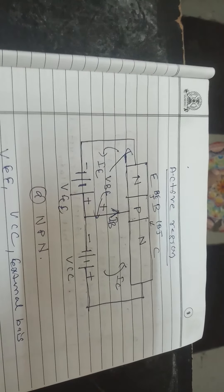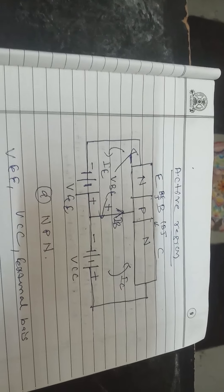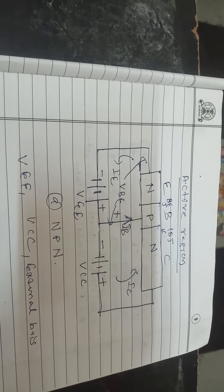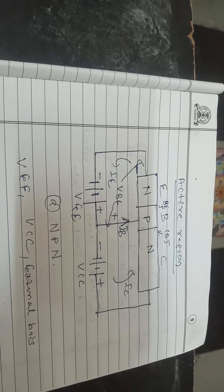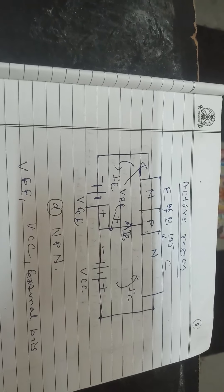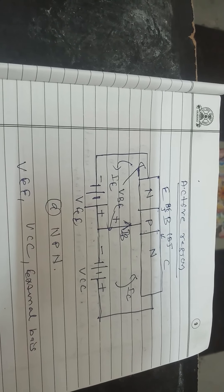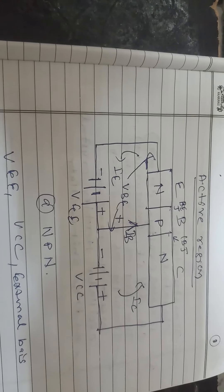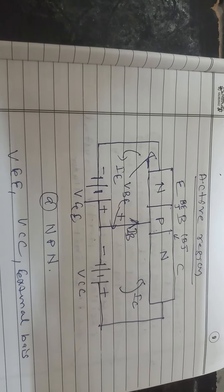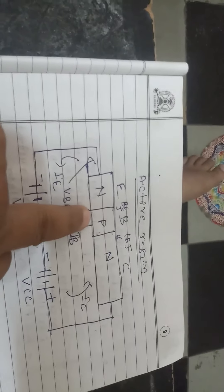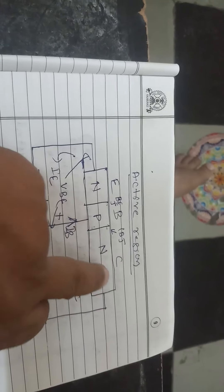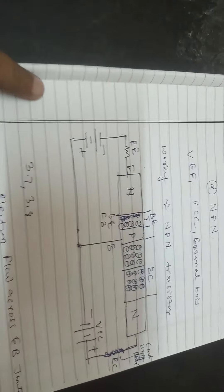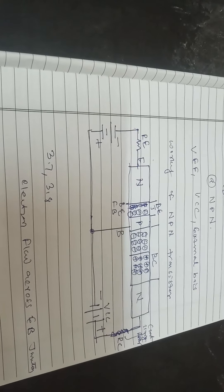Three currents flow in the circuit: emitter current IE, base current IB, and collector current IC. The total current relationship is: IE = IB + IC. For example, if you send 100 electrons from the emitter side, 95 percent reach the collector and 5 percent recombine with holes in the base region. This is due to the thin and lightly doped P-type base, so only 5 percent are lost and 95 percent reach the collector.